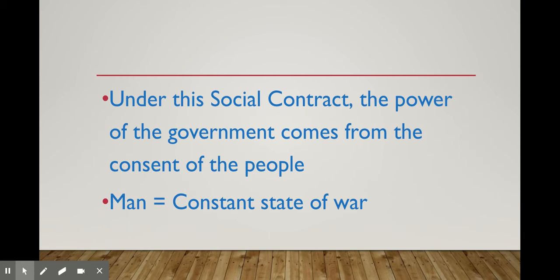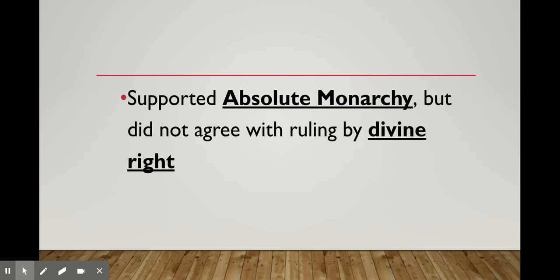Under the social contract, the power comes from the people — that is something Locke and Hobbes both have in common. They won't agree on the type of government that needs to be established, but they both agree that power comes from the people. For Hobbes, man is in a constant state of war: we see something we want, we take it, and the person we're taking it from defends it, and we're in a fight. That is why we need a strong leader. For Hobbes, the best type of government is an absolute monarchy.